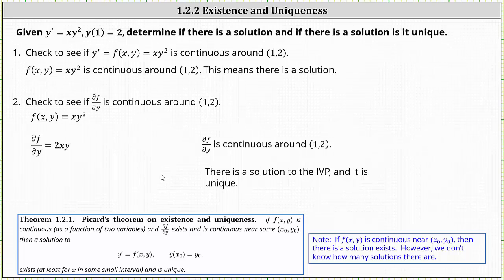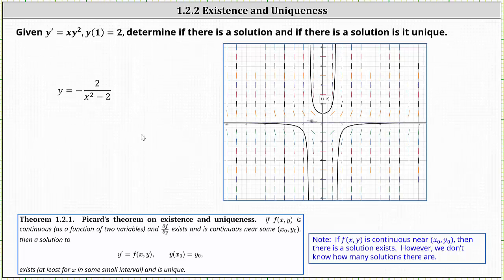Looking at the slope field for y prime equals x times y squared, there is only one function that fits the slope field and passes through the point one comma two, which we can determine using separation of variables. That solution is y equals negative two divided by the quantity x squared minus two. I hope you found this helpful.